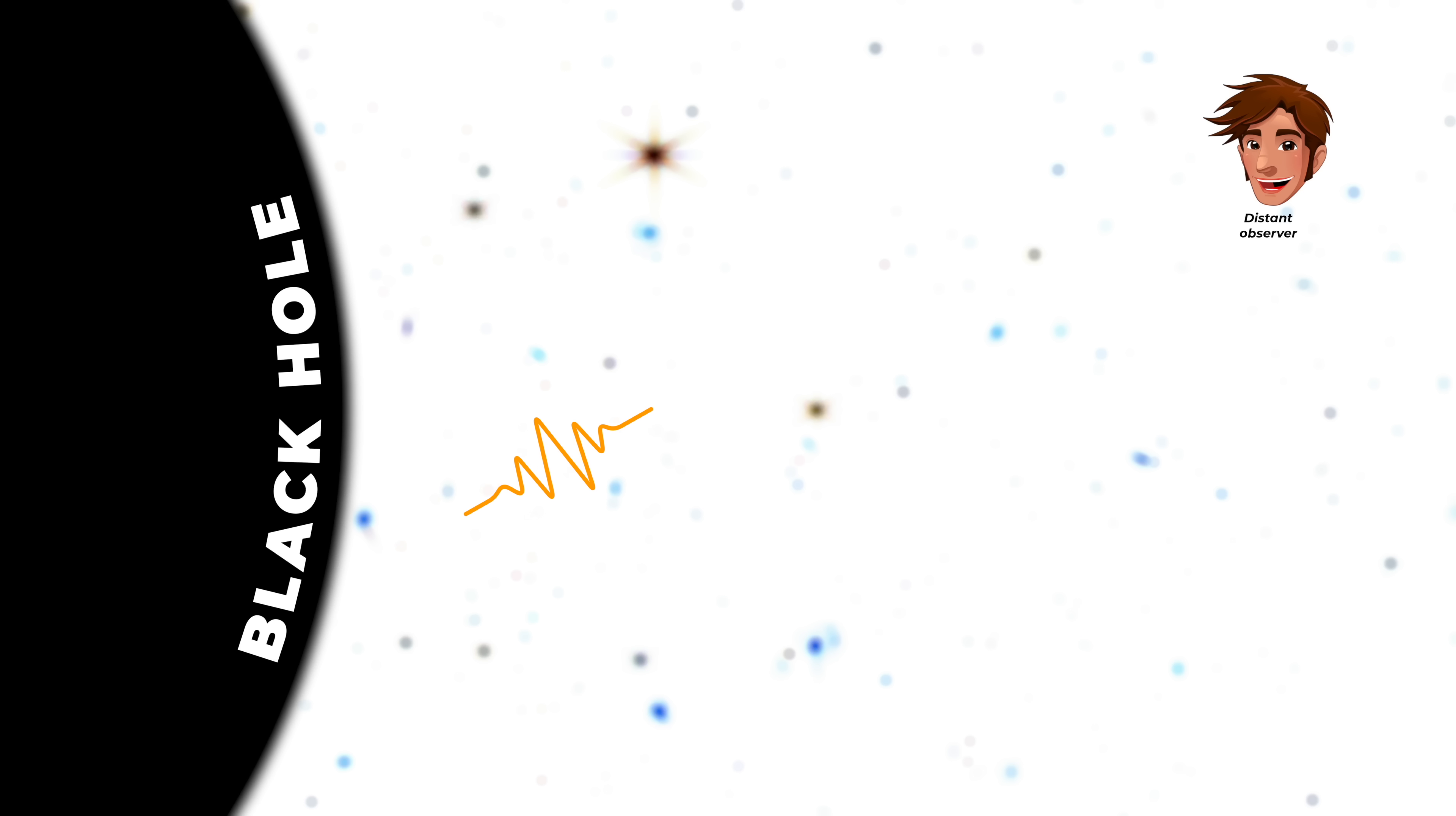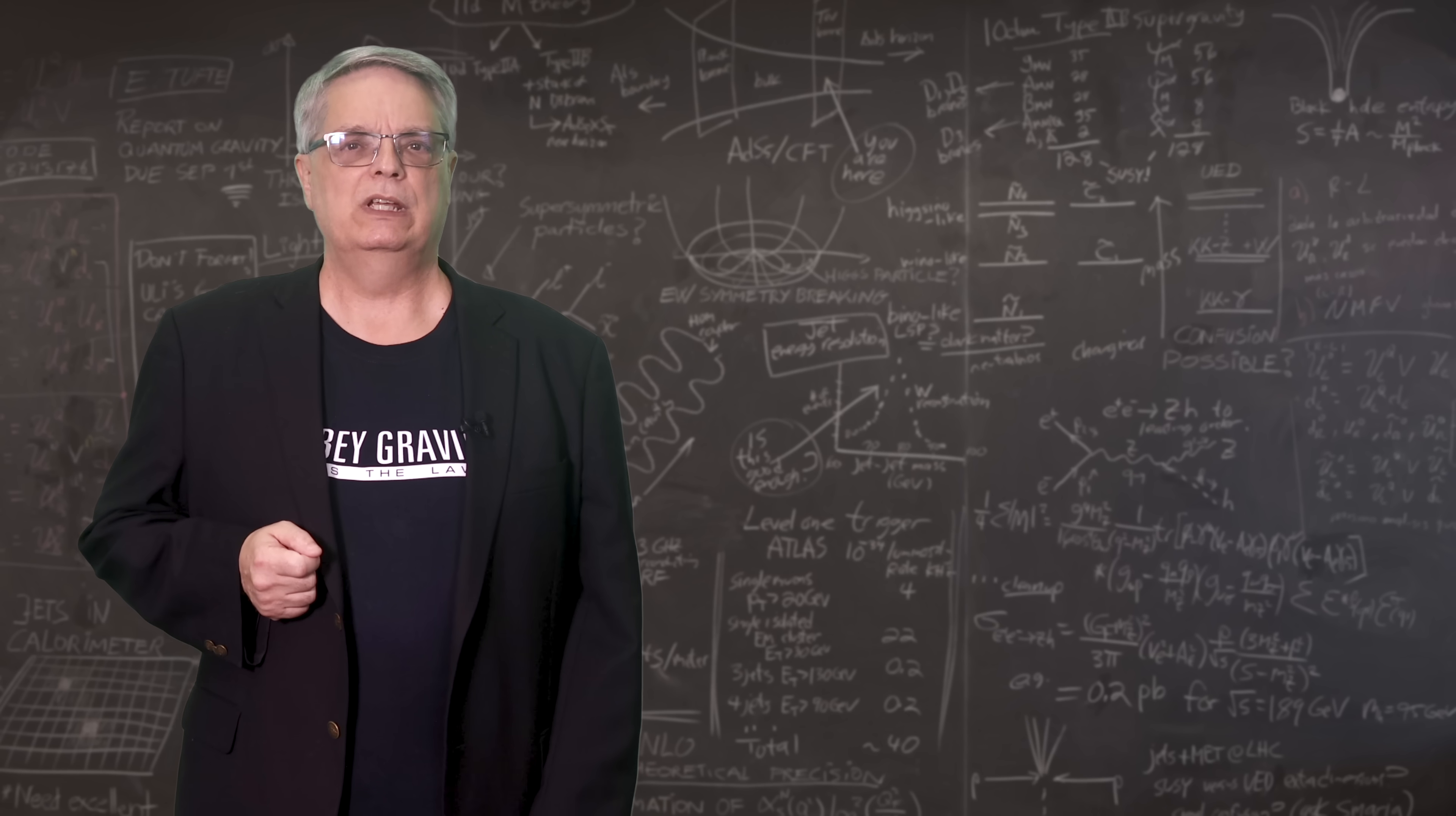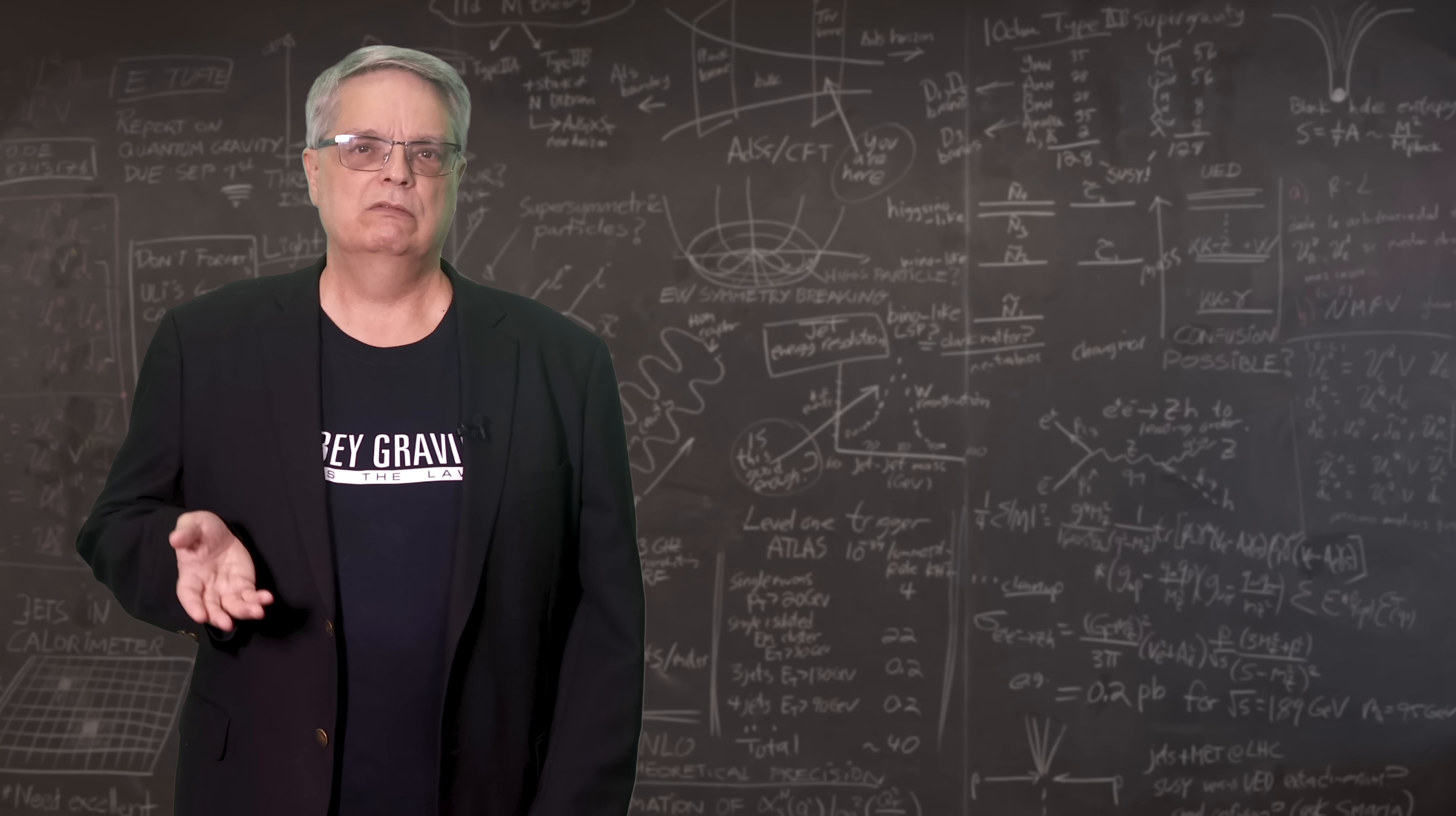You see, light is affected by gravity, and the light emitted from the object falling into the black hole has to fight its way out of the black hole's gravitational field. In that fight, it loses energy. Different colors of light have different amounts of energy. Blue light has more energy, and red light has less.